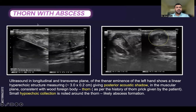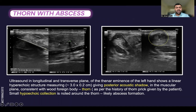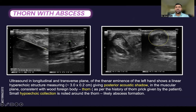This is a case of a foreign body thorn with abscess formation. Ultrasound done in longitudinal and transverse plane of the thenar eminence of the left hand shows a linear hyperechoic structure giving posterior acoustic shadow in the muscular plane, consistent with a wood foreign body thorn as per the history of thorn prick given by the patient. A small hyperechoic collection is noted around the thorn, which represents abscess formation.